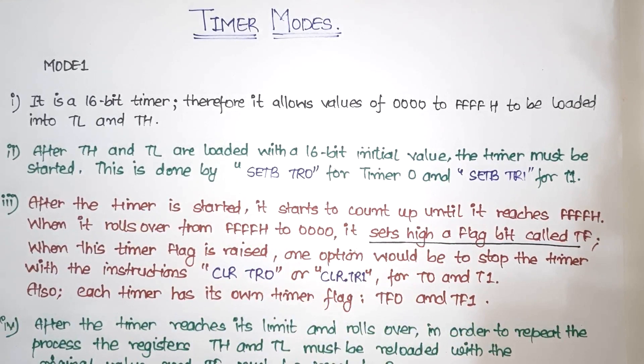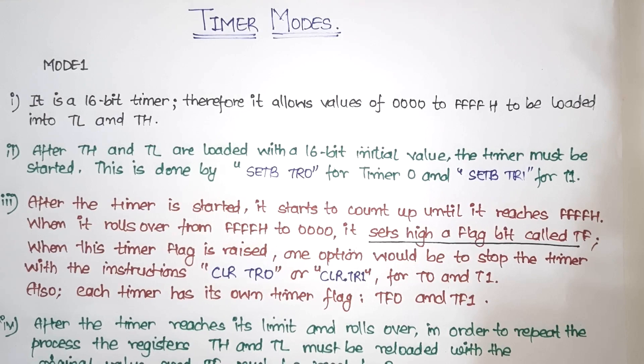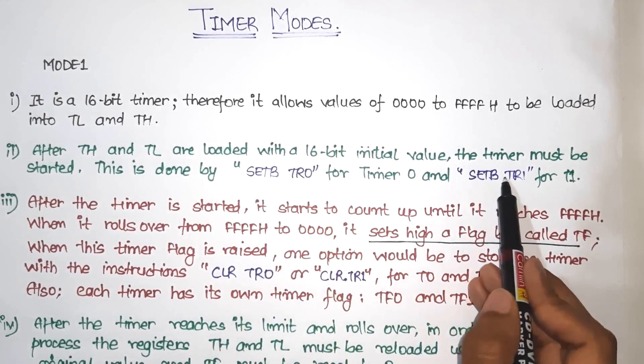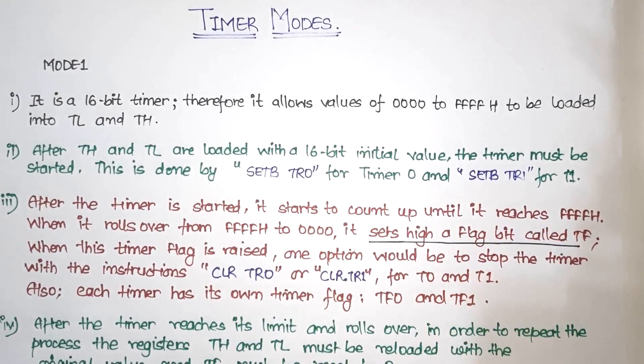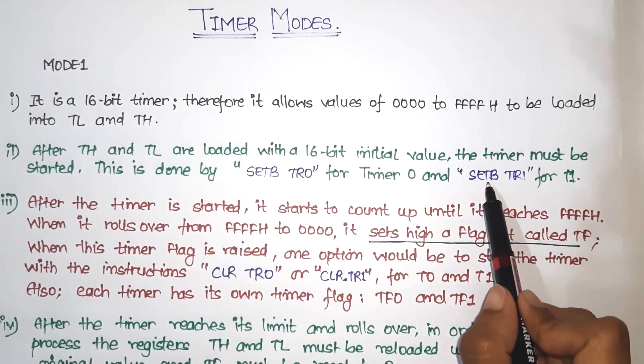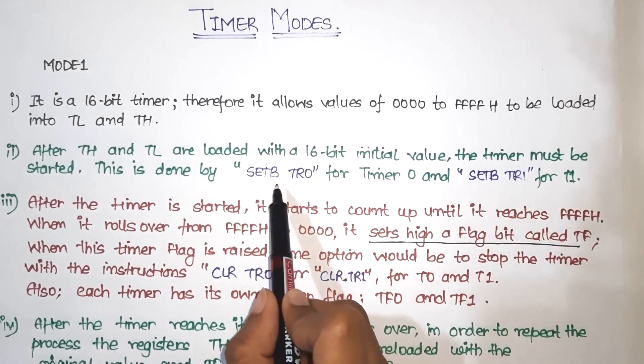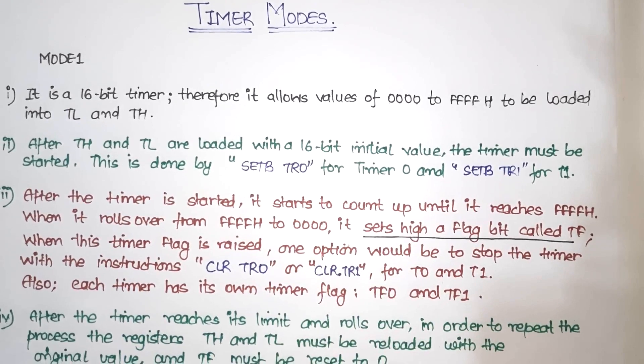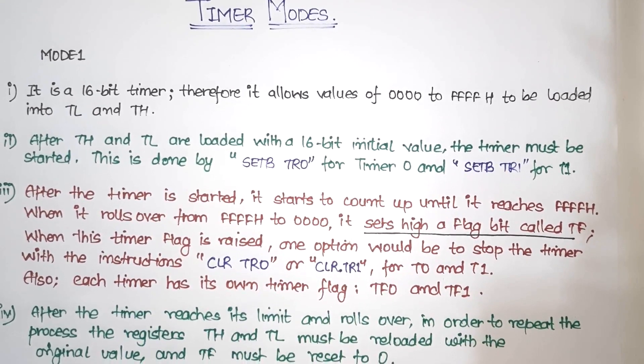So how can we start the timer? We have an instruction called SetBit. So what can we do? SetBit TR0 and SetBit TR1, depending on which timer we are using. If we are using timer 1, then we will start timer 1. Otherwise we will start timer 0 using SetBit TR0. So first is to load the values, second is to start the timer.